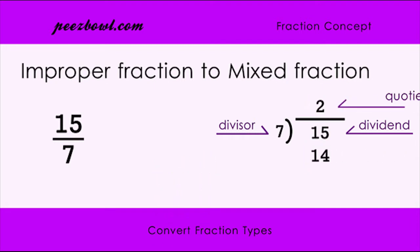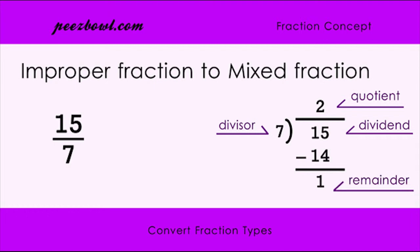Here, 2 will be called the quotient. Now, subtract 14 from 15. The result of this subtraction is 1. As 1 is less than 7, we cannot divide it with 7. In this case, 1 is called the remainder of the division.